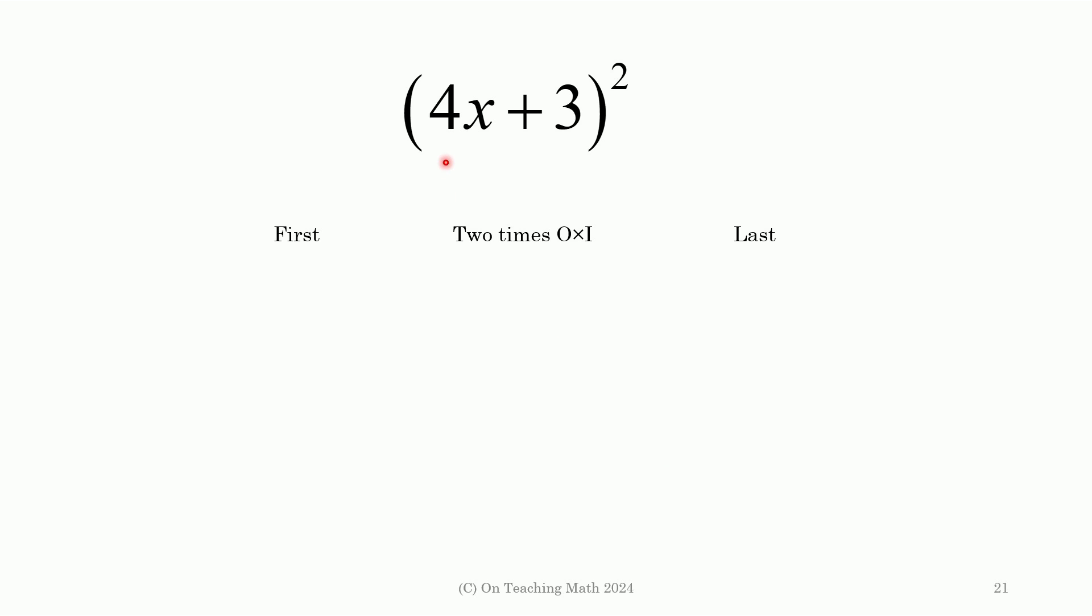Alright. Here we go. So if I do first, that's 4x times 4x. That's 16x squared, right? If I do 2 times this, so that would be 4x times 3. That would be 12. If I do double that, I get 24x.